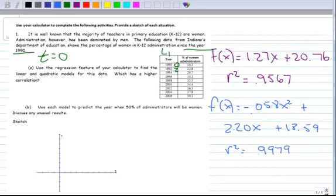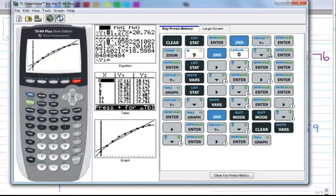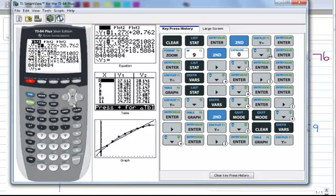Use the model to predict the year when 50% of the administrators will be women. So here's a way to do it in your calculator. Go back to your calculator. Go to y equals. There's the linear. There's the quadratic. Arrow down to y sub 3. And you're going to type in 50 for 50%. Press graph.